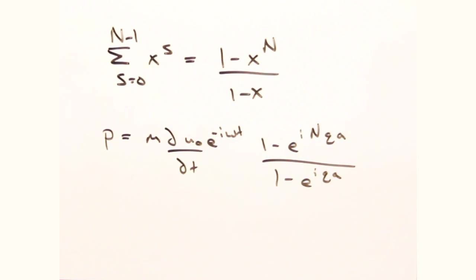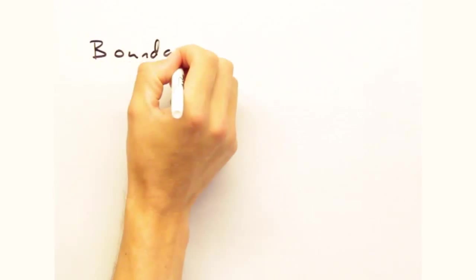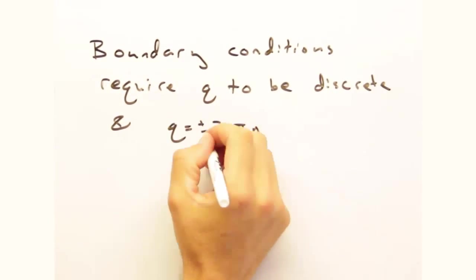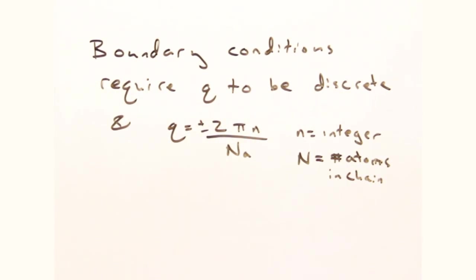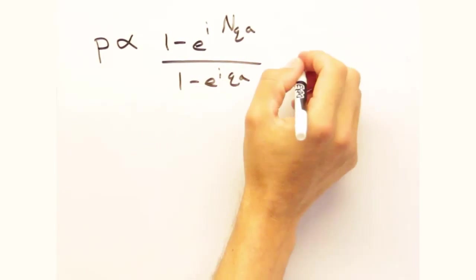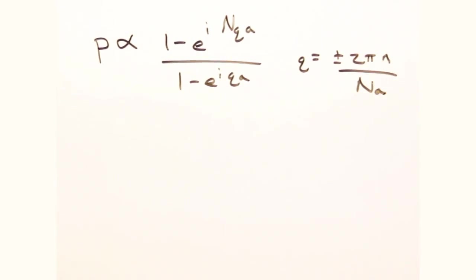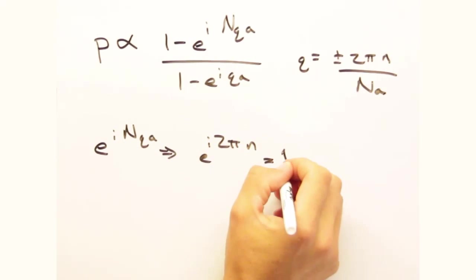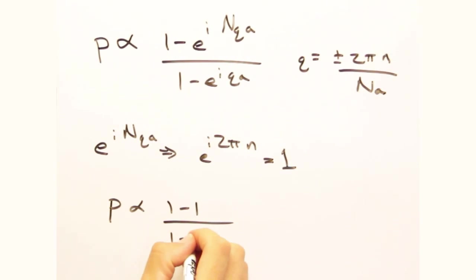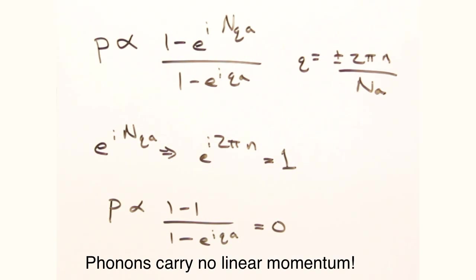That doesn't look much better. Eh, not quite done yet. First we need a boundary condition on q, which we'll go through in the next video, but for convenience I'm just going to invoke it now. Okay, so let's plug that into our new momentum expression, and this exponential in the numerator will always be 1 since n is an integer. And we get 1 minus 1 in the numerator. Which proves mathematically that phonons carry no linear momentum.